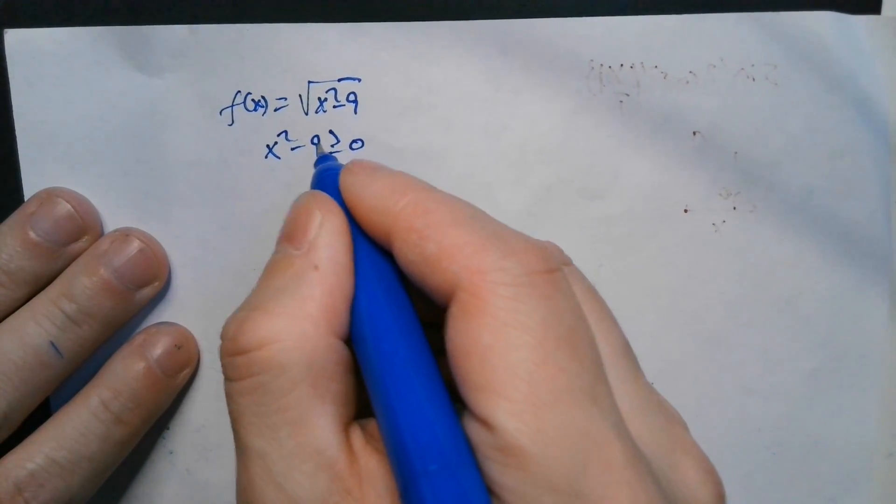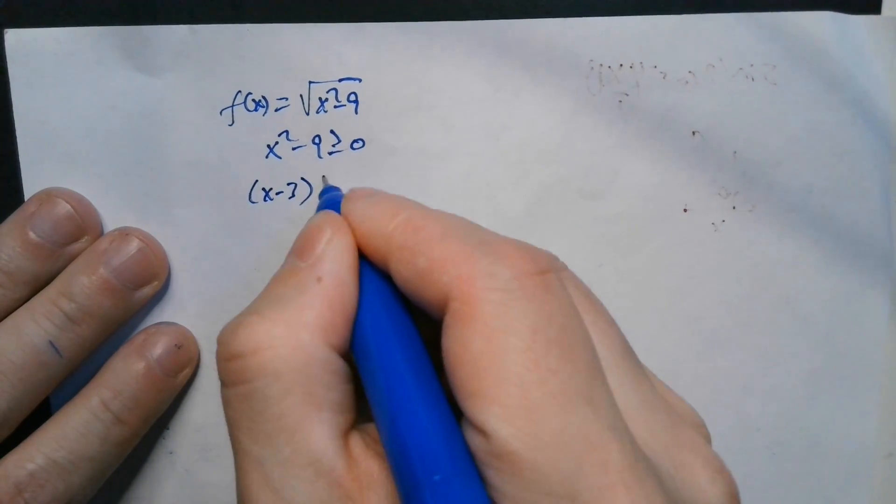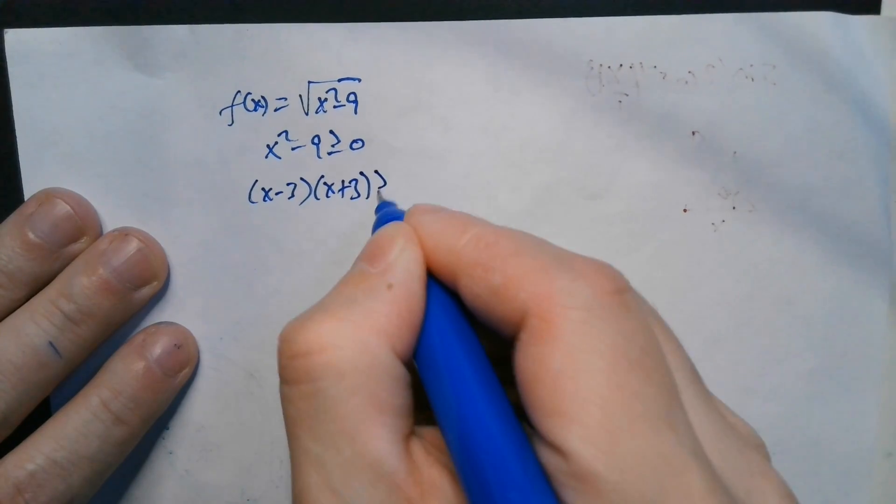The fact is the difference of squares, 9 is 3 squared. So you're going to have x minus 3 and then x plus 3 must be greater than or equal to 0.